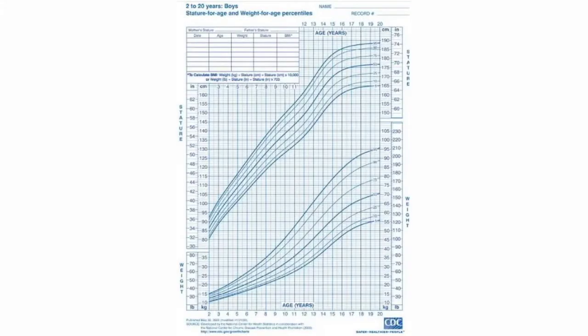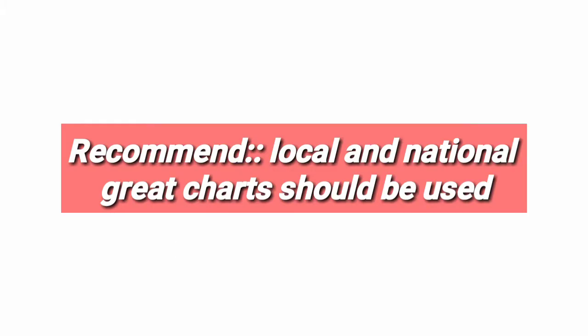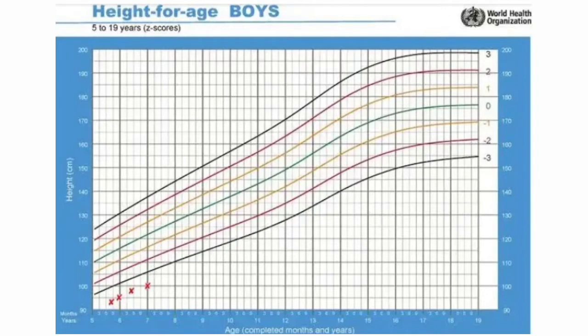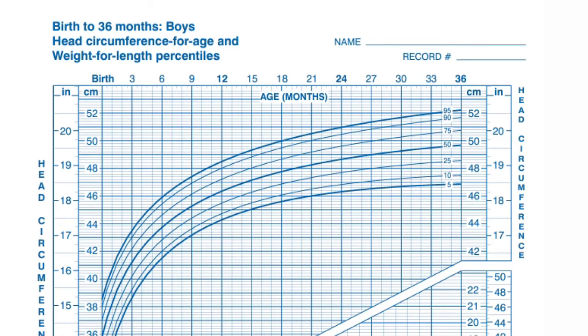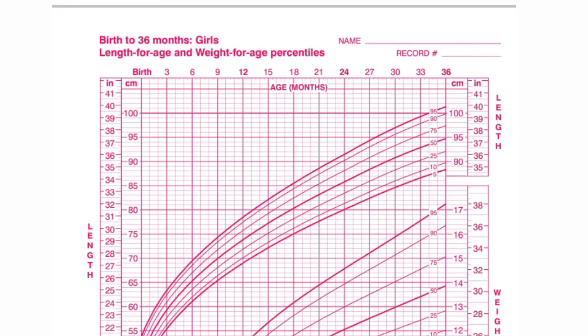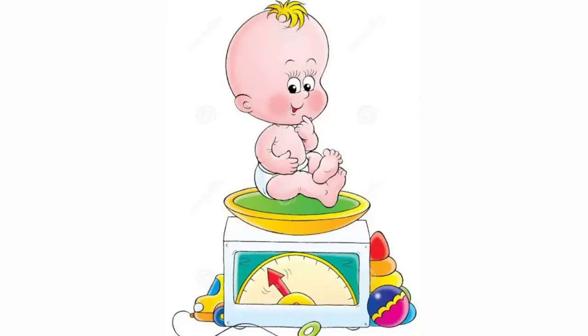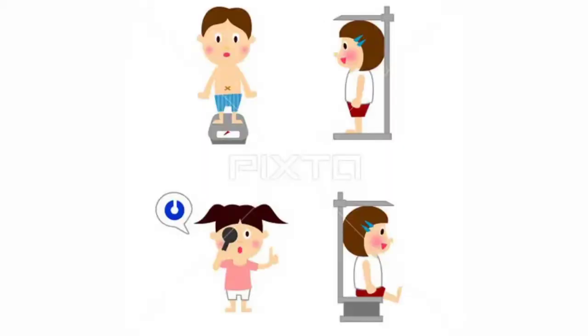We usually use the CDC — that is Center for Disease Control — growth charts for this purpose. WHO charts are also available, but the commonly used charts are the CDC growth charts. There is color coding: blue for boys and pink for girls. Charts are available for weight-for-age, length-for-age, weight-for-height, head circumference, and BMI.